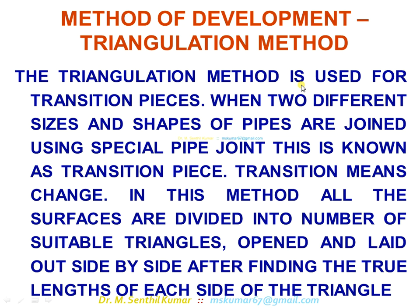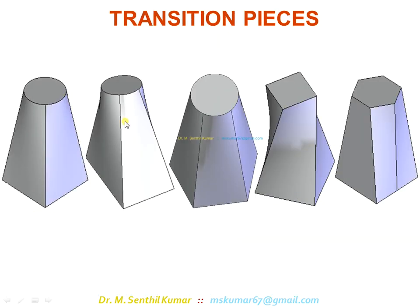The triangulation method is used for transition pieces, when two different sizes and shapes of pipes are joined using a special pipe joint known as a transition piece — transition meaning change. In this method, all the surfaces are divided into a number of suitable triangles, opened and laid out side by side after finding the true lengths of each side of the triangle. For example, if the base is a square and the top face is a circle, the cross section in between is neither a circle nor a square. For these kinds of objects, you should follow the triangulation method.